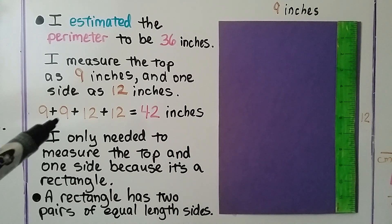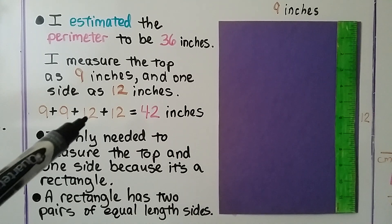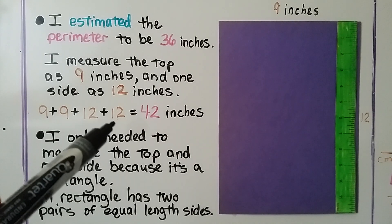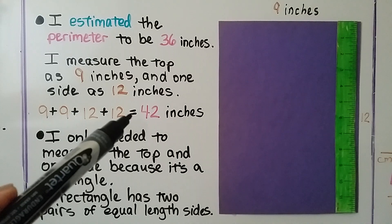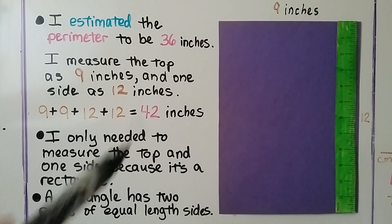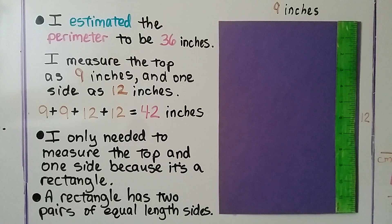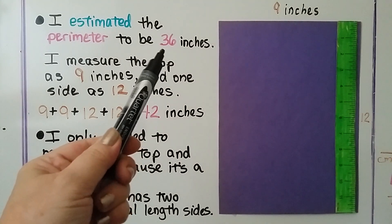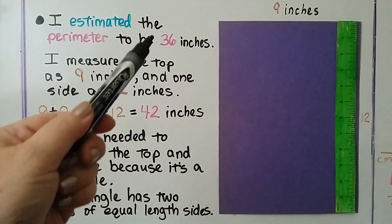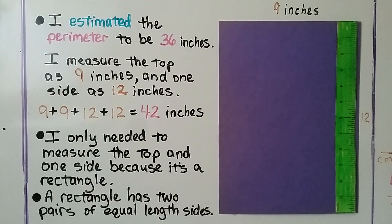We add 9 plus 9 plus 12 plus 12, which equals 42 inches. So the perimeter of the construction paper is 42 inches. I had estimated 36 inches, so my estimate was low compared to the actual perimeter.